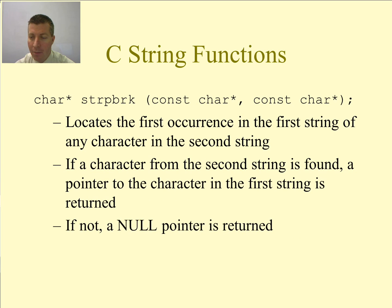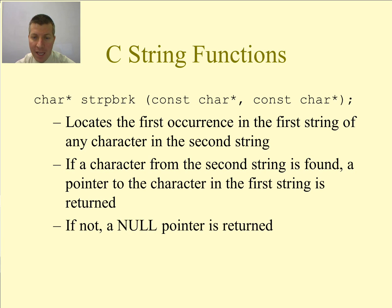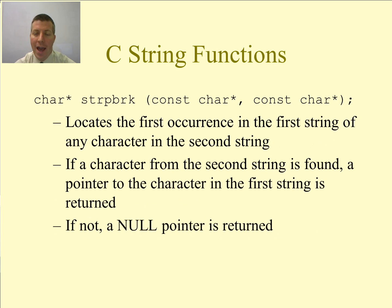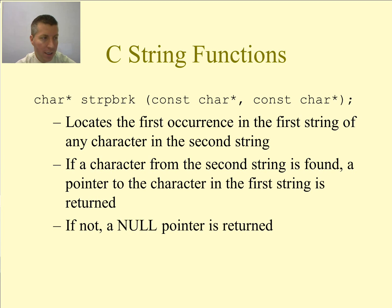The strpbrk function locates the first occurrence in the first string of any character in the second string. If a character from the second string is found, a pointer to that character in the first string is returned. It takes all the characters in the second string and tries to find the occurrence of any of them in the first string, then returns a pointer to the first such occurrence.